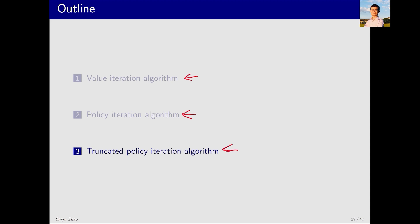I'd like to emphasize that the third algorithm is an extension of value iteration and policy iteration. In other words, value iteration and policy iteration are two special cases of truncated policy iteration. By introducing the third algorithm, we can better understand the difference and relationship between value iteration and policy iteration.